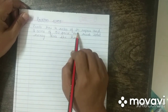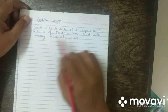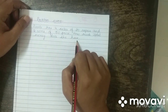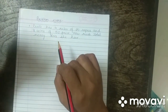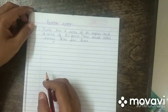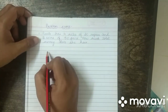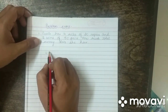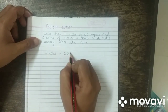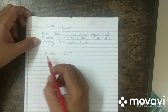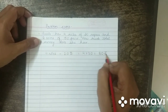Preeti has 4 notes of 20 rupees and 8 coins of 50 paisa. How much total money does she have? First, Preeti has 4 notes of 20 rupees, so 4 multiplied by 20 equals 80 rupees.